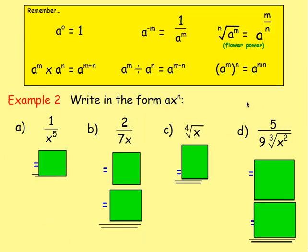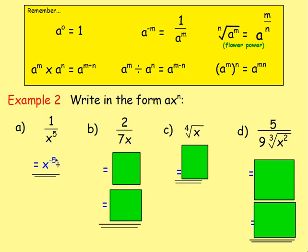Let's try more examples — write them in the form ax to the power of n. So we don't want x to be in the bottom of a fraction, and we're not wanting any square root signs; we want it as x to the power of something. For 1 over x to the power of 5, you would move it to the top, so you'd end up with x to the power of negative 5 — the index changes from a positive to a negative. For 2 over 7x, the two-sevenths will stay as two-sevenths, and the x moves from the bottom to the top, so it becomes 2 sevenths times x to the power of negative 1. It's only the base and the index that move.